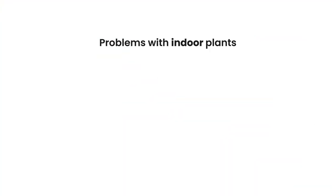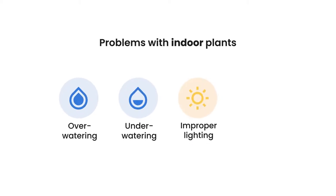A lot of the time the problems with indoor plants are due to overwatering, underwatering, improper lighting, and certain types of pests.